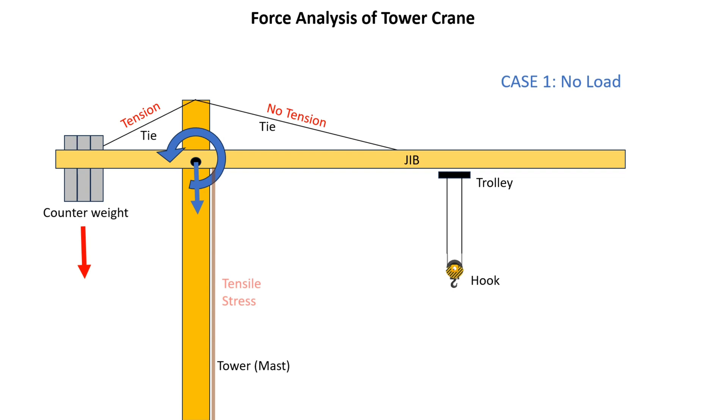Case 2: Balanced load. In balanced load conditions, the resultant bending moment on tower is zero and ideally there is no tension on both ties. Here there is only vertical load transferred to the tower, with magnitude equal to the counterweight plus the load hanging on the hook.